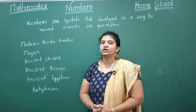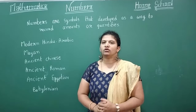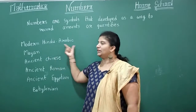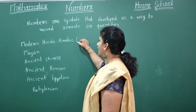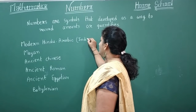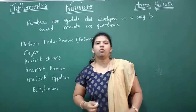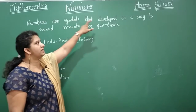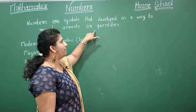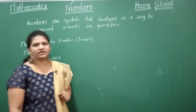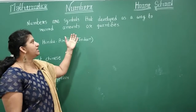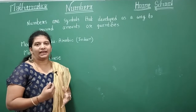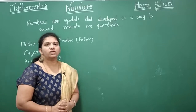That was a little recap of history. Now let's start learning what numbers actually are. Our numbers are modern Hindu-Arabic numbers, also called the Indian system of numbers. Numbers are symbols that developed as a way to record amounts or quantities. These are one type of symbol which developed to represent and record any quantities.